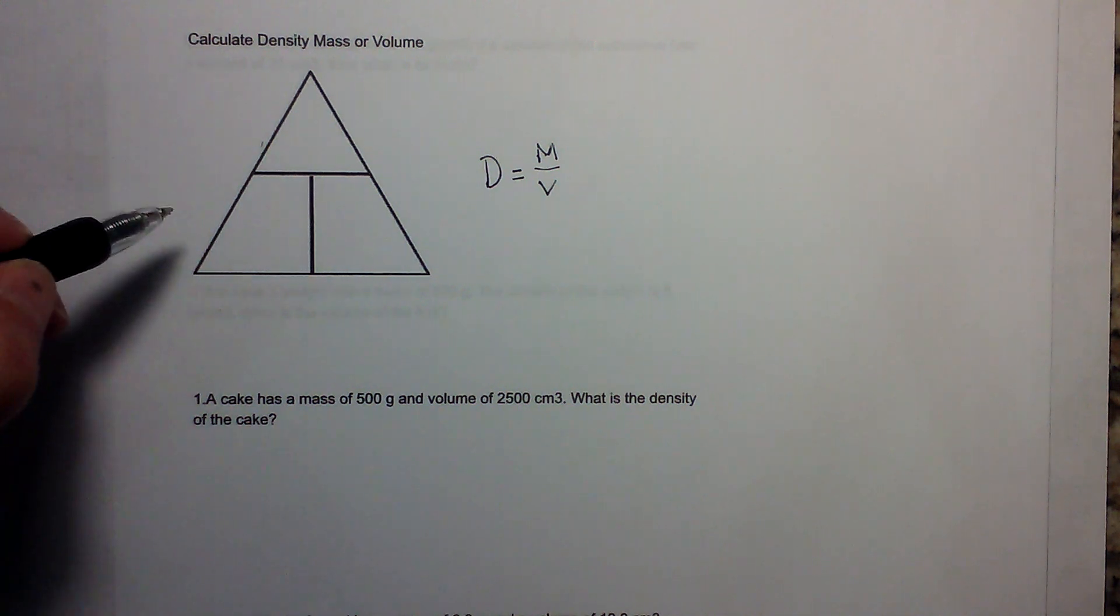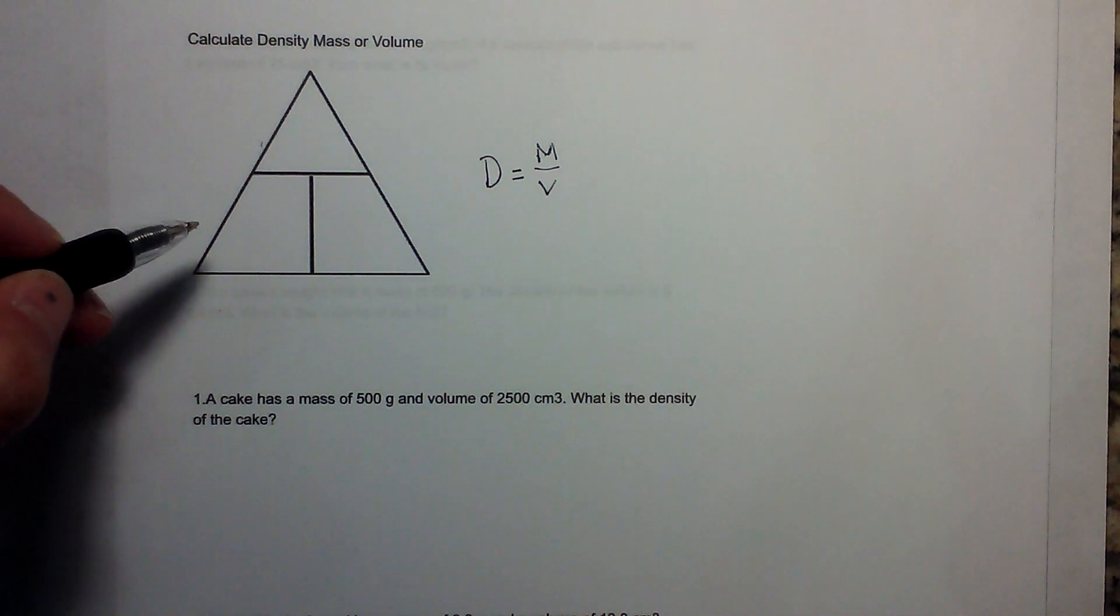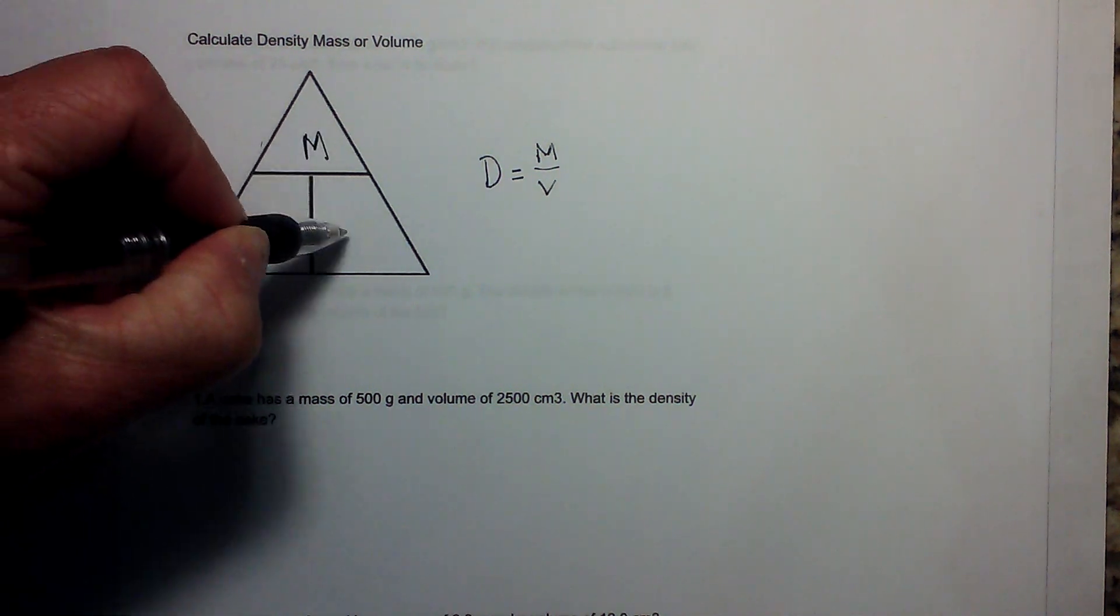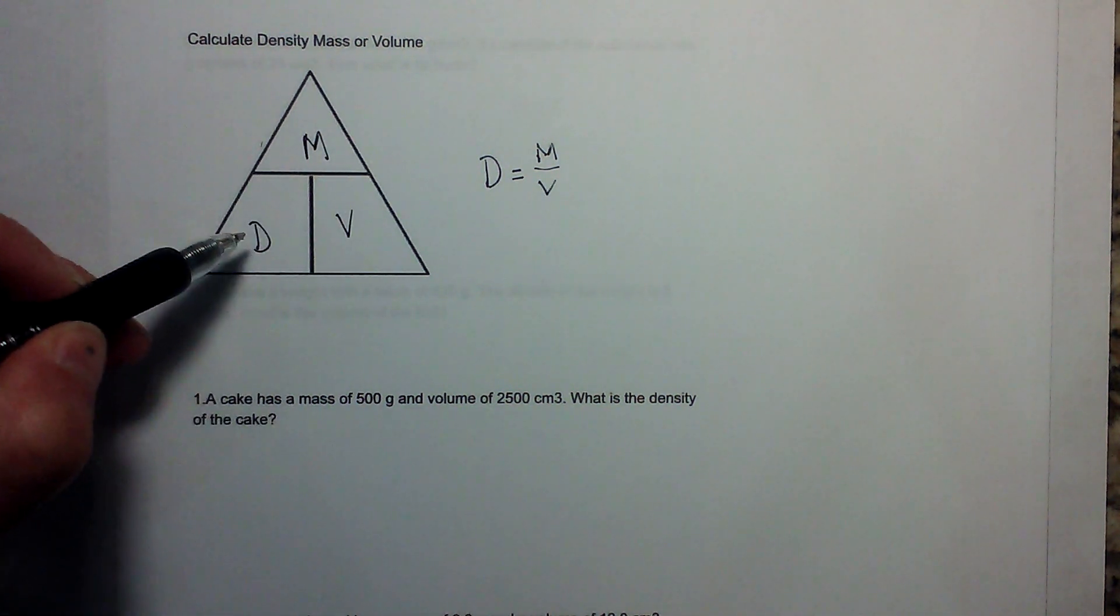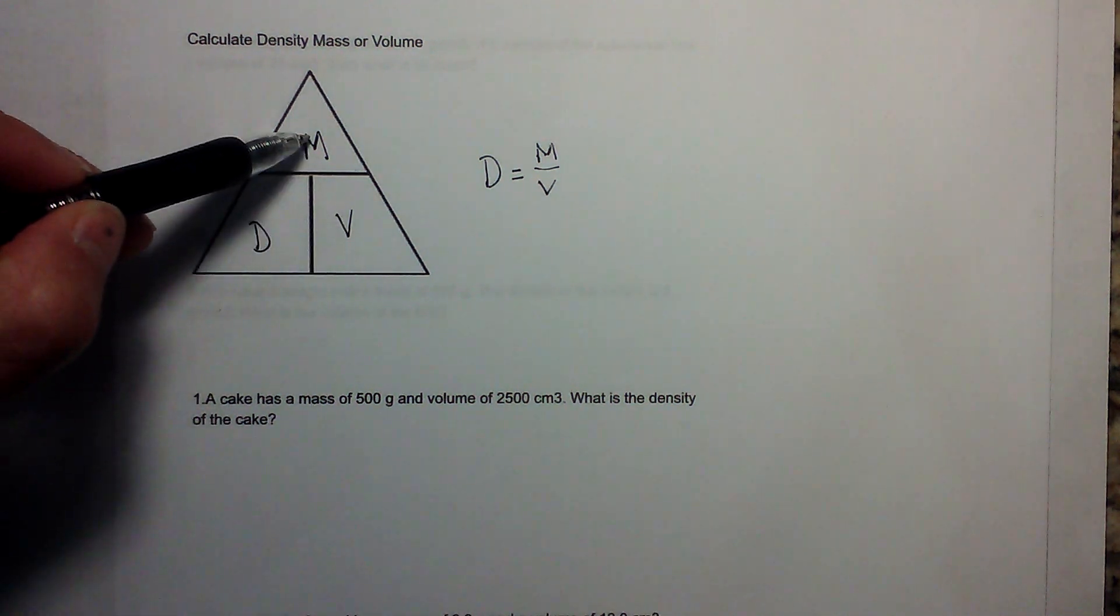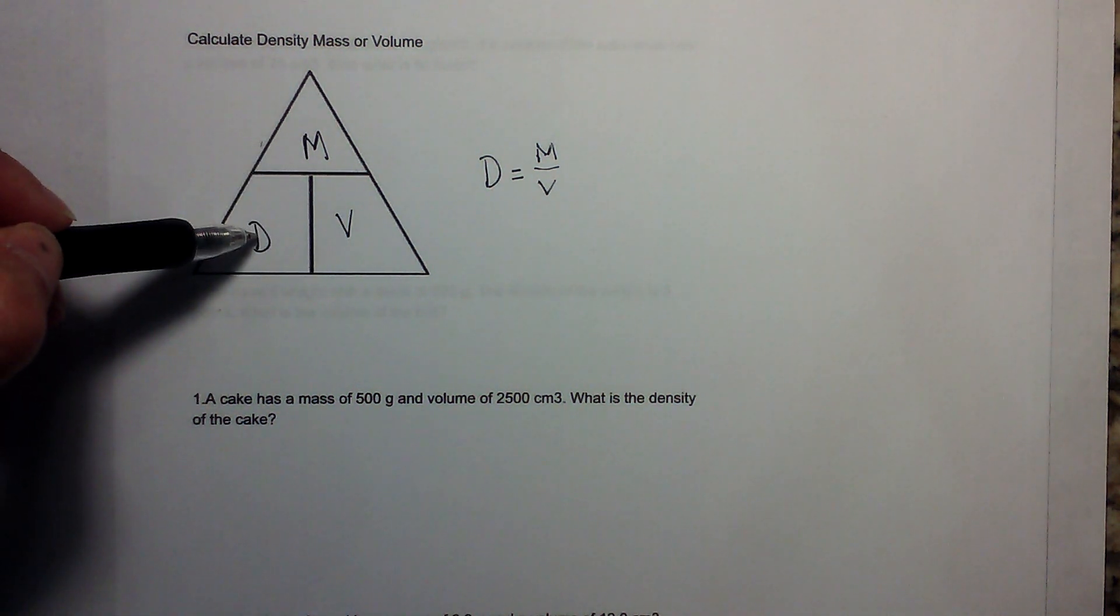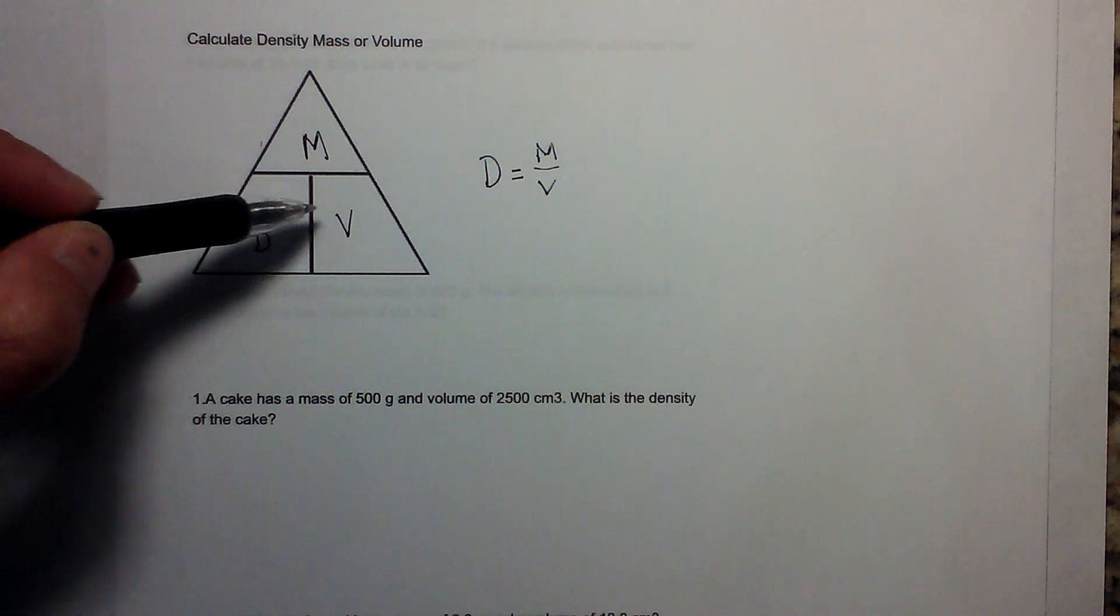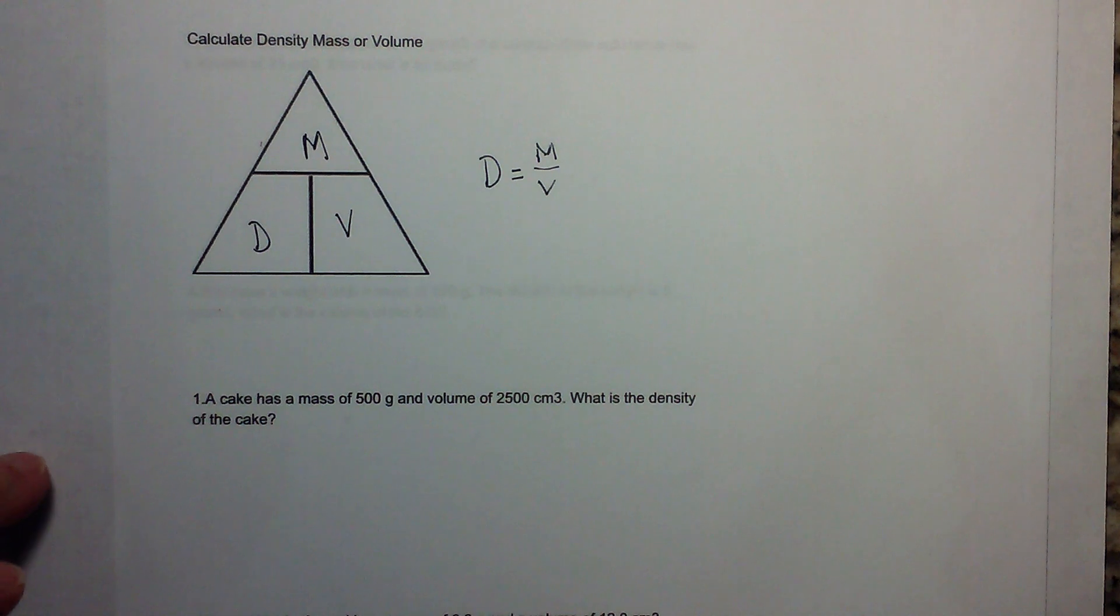You can use this triangle and remember you're going to the DMV, so it's going to be DMV. Density is mass over volume. If you need volume, it's mass divided by density. If you need mass, it's density times volume, and I'll work an example for each of these.